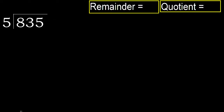835 divided by 5. 8 is not less, so we work with 8. 5 multiplied by which number is nearest to 8 but not greater? 5 multiplied by 2 is 10 — 10 is greater. 5 multiplied by 1 is 5 — 5 is not greater, ok.